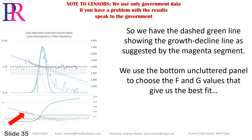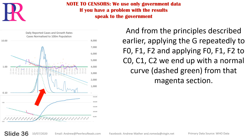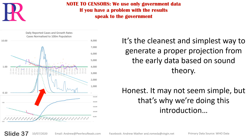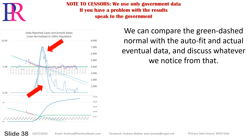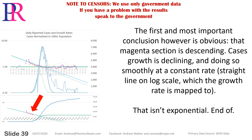We have a dashed green line showing the growth decline line as suggested by the magenta segment. We use the bottom uncluttered panel to choose F and G values that give the best fit. Applying G repeatedly to F0, F1, F2 and applying those to C0, C1, C2, we end up with a normal curve — dashed green — generated from that magenta section. It's the cleanest and simplest way to generate a proper projection from early data based on sound theory. The first and most important conclusion is obvious: the magenta section is descending. Case growth is declining smoothly at a constant rate — a straight line on a log scale. That isn't exponential. End of.